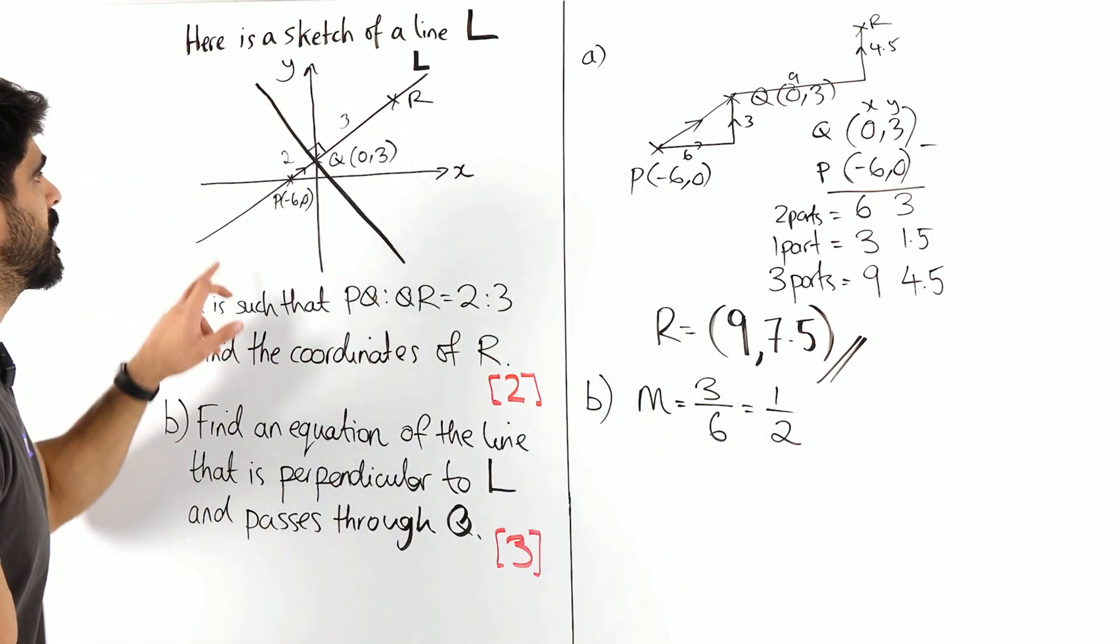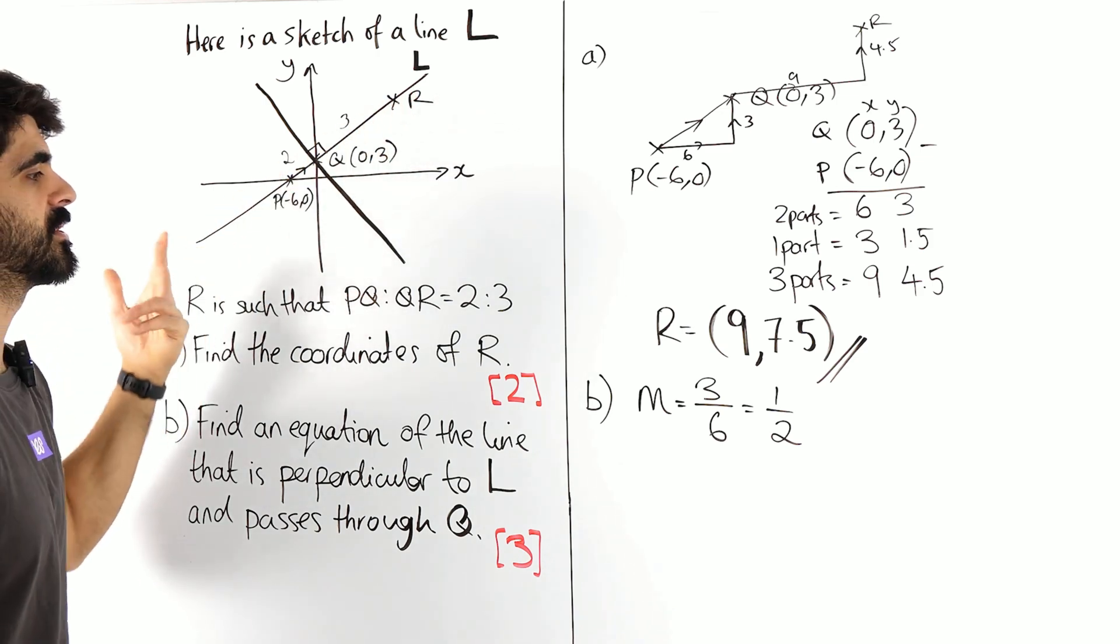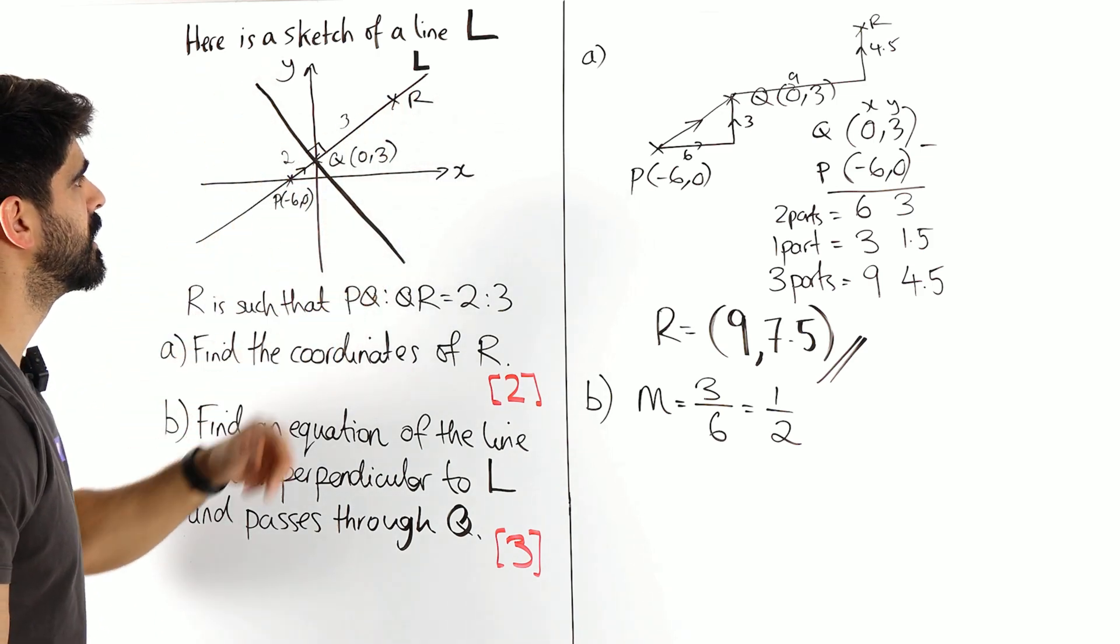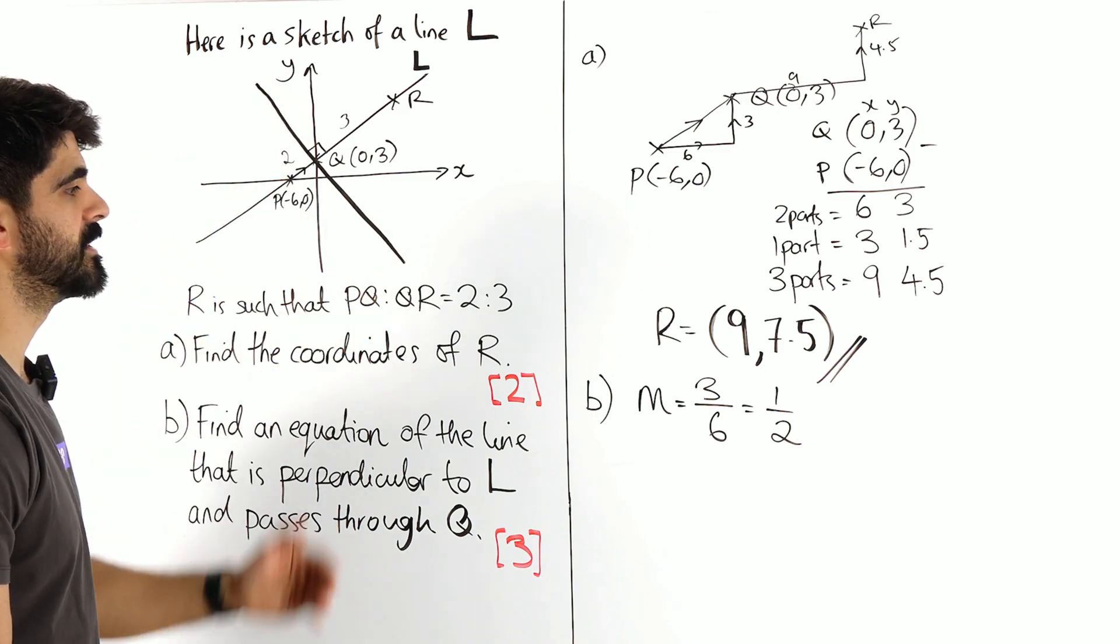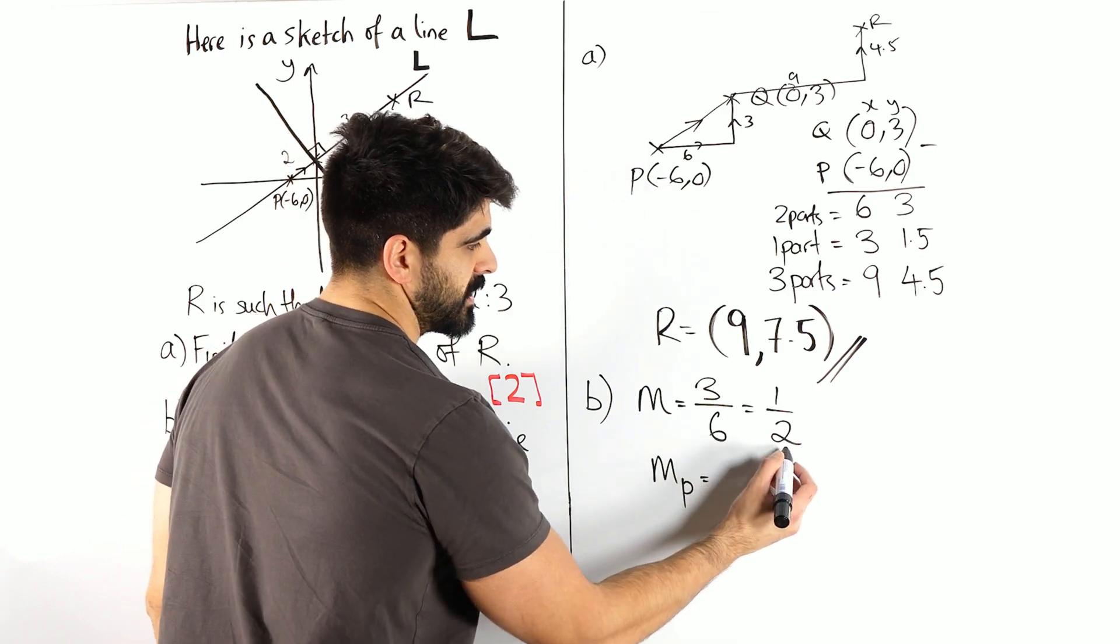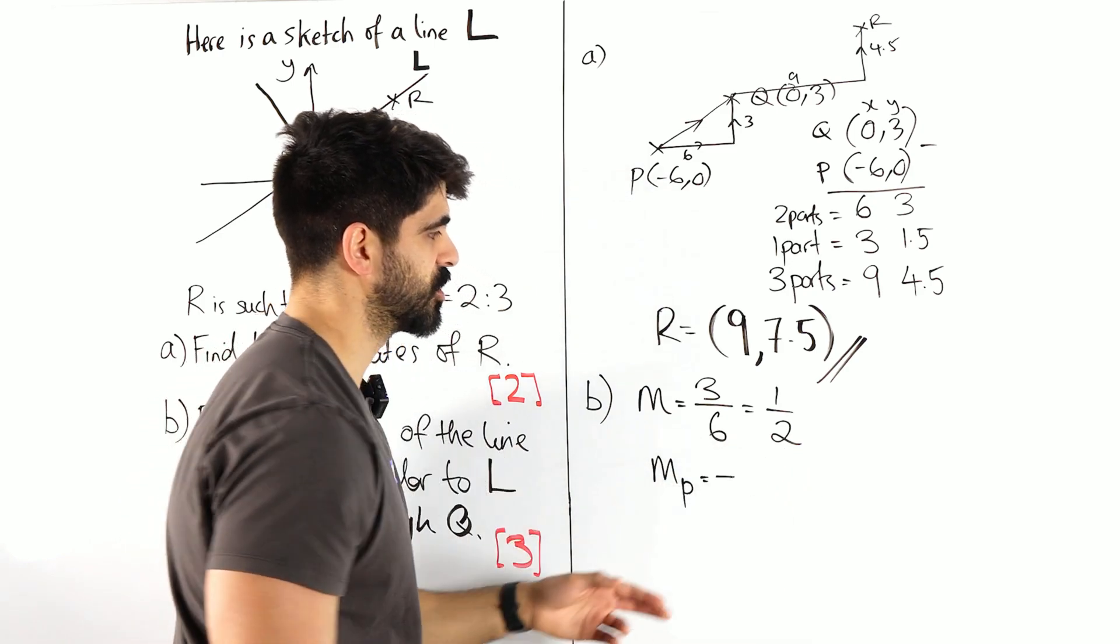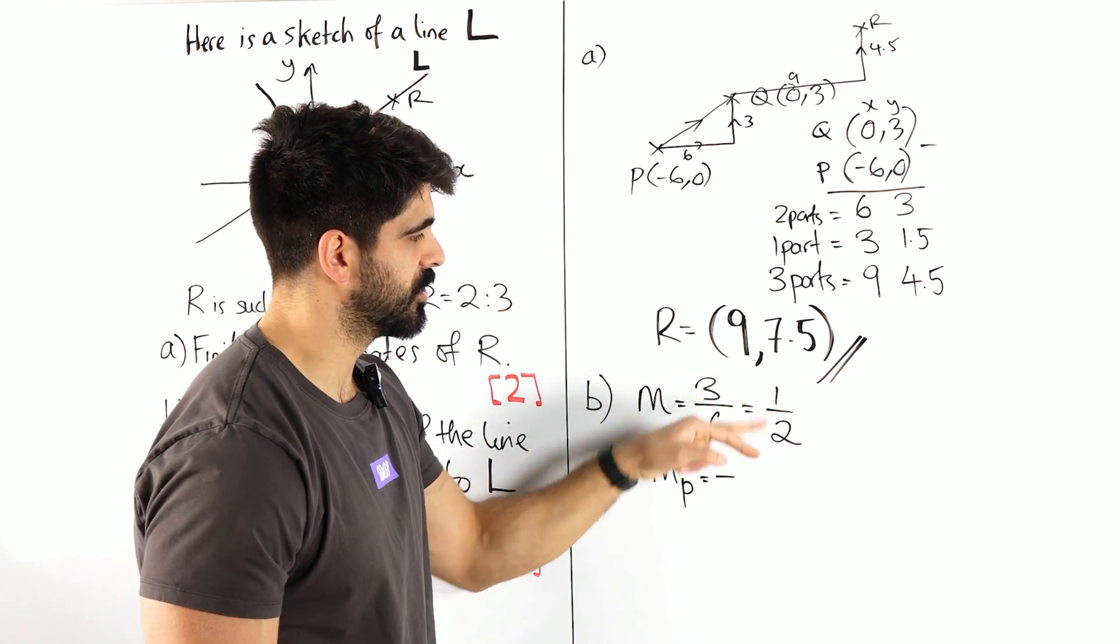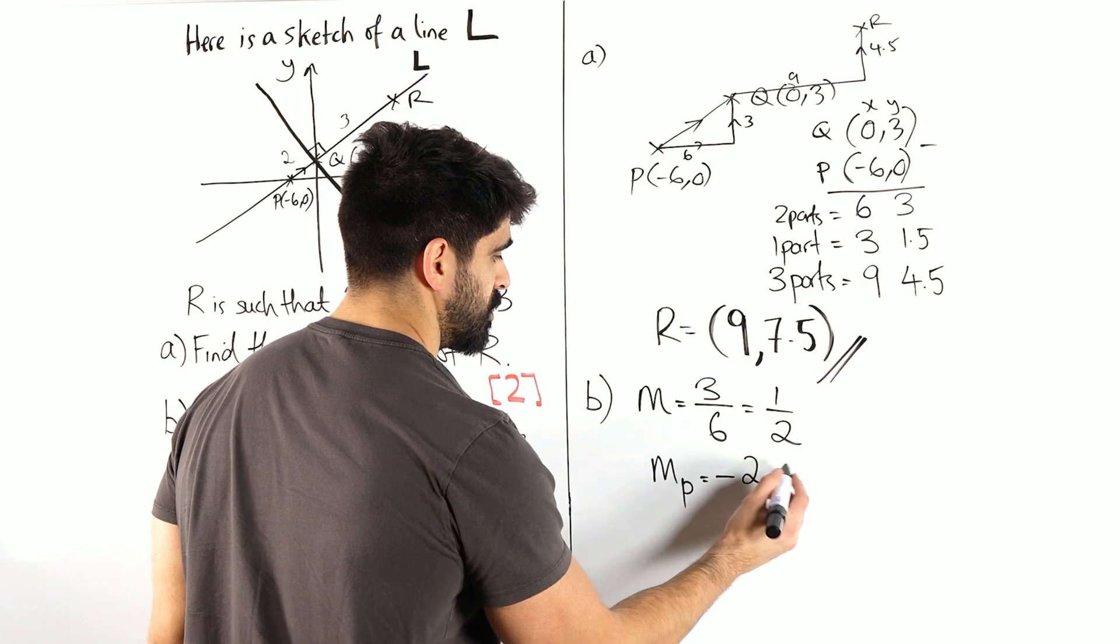Okay, now look at your diagram, does that look like about a half? It does. And now we're going to do our negative reciprocal to find the perpendicular. I call that MP. The perpendicular gradient is going to be the negative reciprocal. Negative means changing the sign, then you switch the 2 and the 1. That will become 2 over 1, which is just 2.